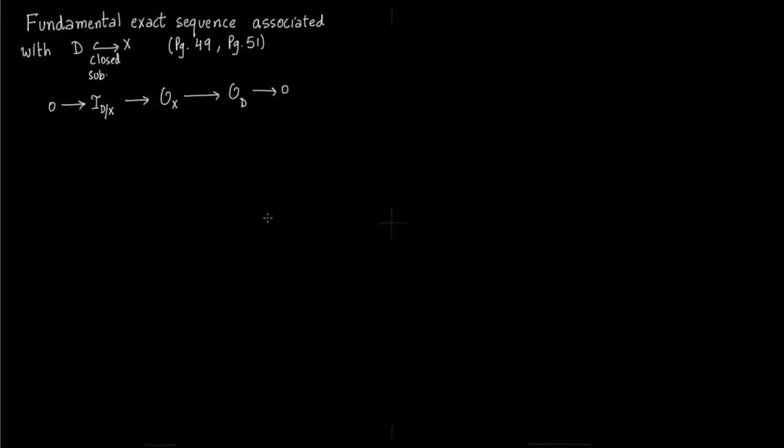To make this more precise, D is a closed subvariety. We say this D is generated by a single polynomial. We want this D to be irreducible. So D is defined by an ideal.